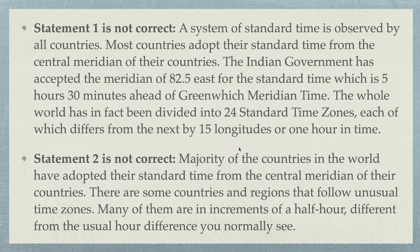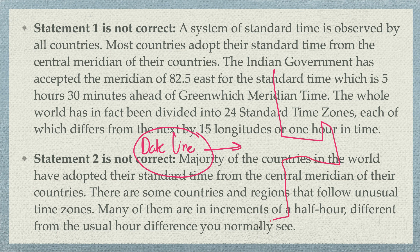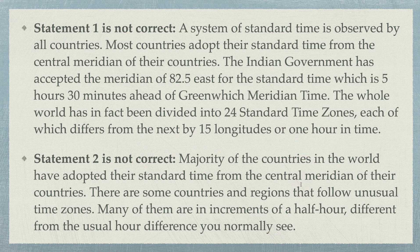If you want to know which countries deviate, search on Google for the international date line and you'll be surprised — the date line is not straight. It is bent in various places. All longitudes are straight lines, but the date line is not. If you don't know about it, let me know and I'll make a video.